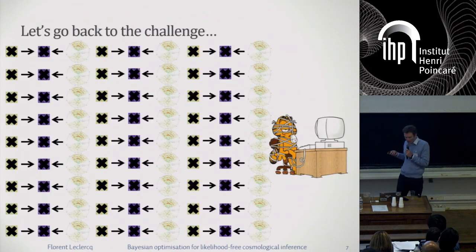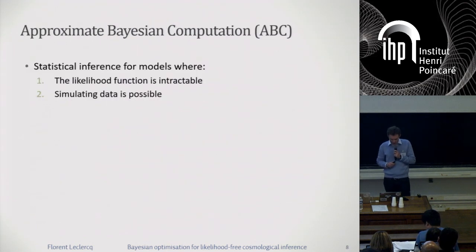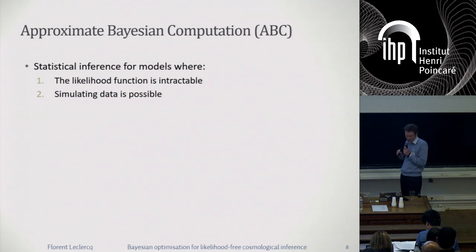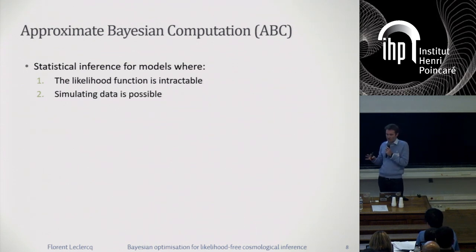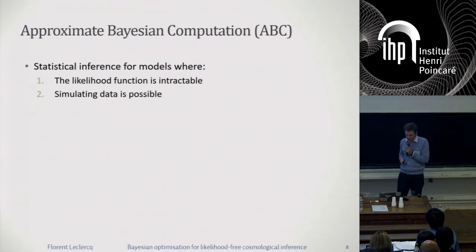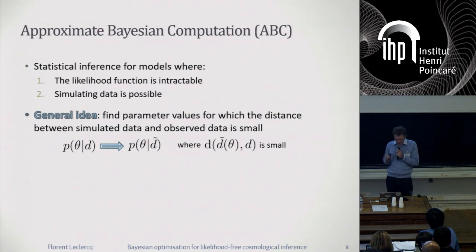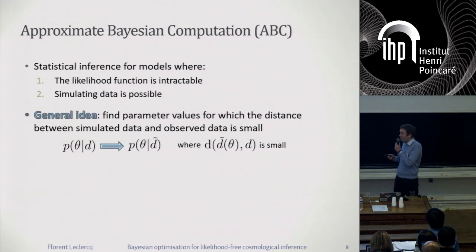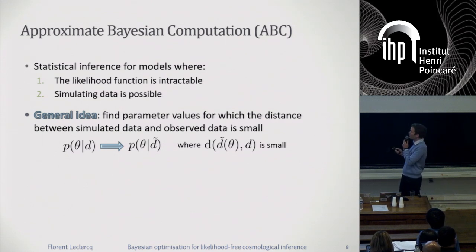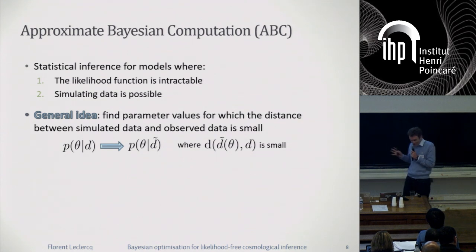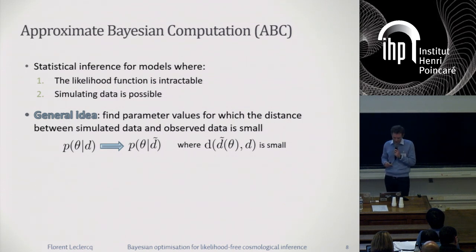If we formalize this idea, what we're trying to do is what's known as approximate Bayesian computation (ABC) in statistics — statistical inference for models where the likelihood function is intractable, which is our case because it lives in 10 million dimensions, but simulating data is possible. The general idea is to find parameter values for which the distance between simulated data and observed data is small. The approximation is to go from the exact posterior p(θ|d) to an approximate posterior p(θ|d̃), where d̃ are simulated data and the distance between simulated and true data should be small.